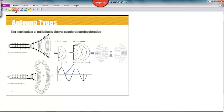So on this slide, what I want to go over is the mechanism by which radiation occurs. I called it, that's a typo, it's not antenna types, it's radiation mechanisms.